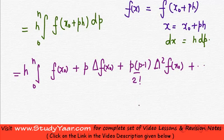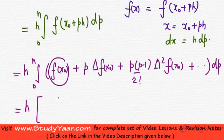Now you have this to be integrated with respect to dp. You have your p's over here. You can integrate them term by term. So you have h into integrate this guy with respect to p. This is a constant, so you are going to have f of x0 into p.